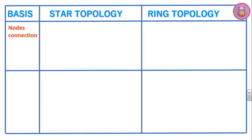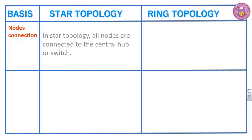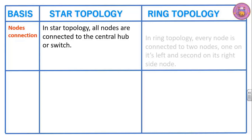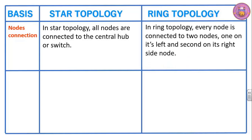Nodes connection. In star topology all nodes are connected to the central hub or switch. In ring topology every node is connected to two nodes — one on its left and one on its right side.